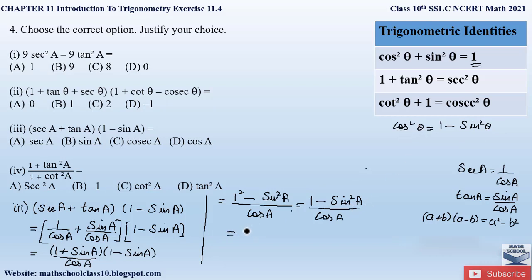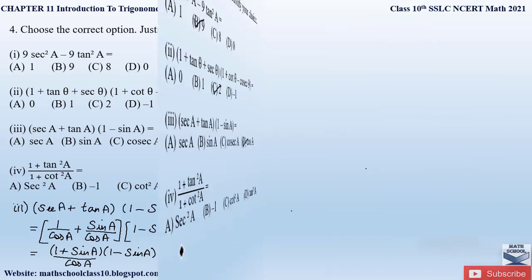So 1 minus sin squared A equals cos squared A. Substituting, we get cos squared A divided by cos A. Since cos squared A is cos A into cos A, we cancel one cos A with the denominator, and the result is cos A. The correct answer for the third part is cos A, that is option D.